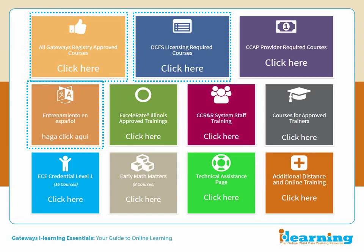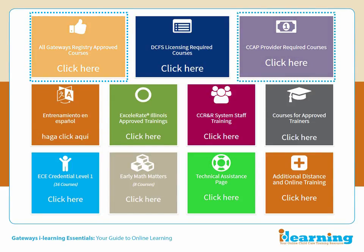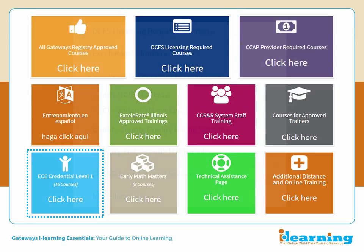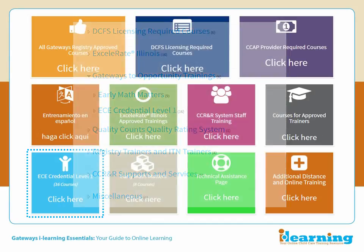All of the ECE Credential Level 1 modules will appear in the CAP Provider Required Trainings, as well as the Gateways to Opportunity Trainings list and their own section called ECE Credential Level 1. In addition to using the colorful boxes to help choose your course, you can use the course category links below. The category links in the boxes are not all the same, so if you cannot find what you are looking for in one of them, check the other.